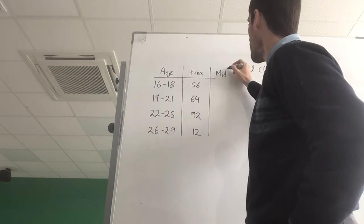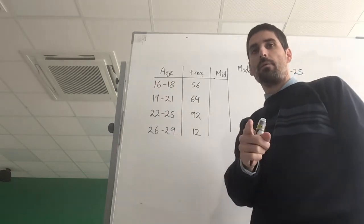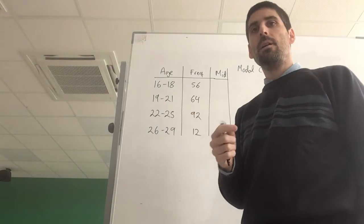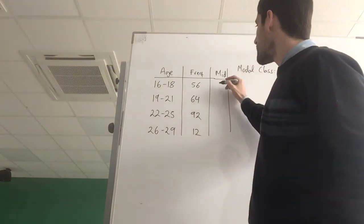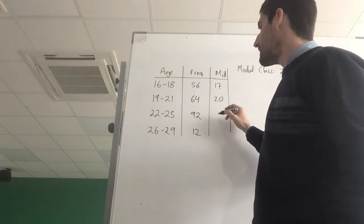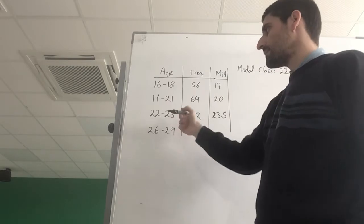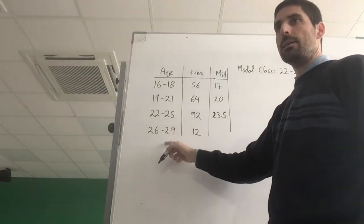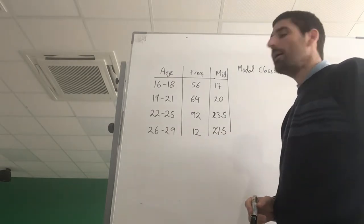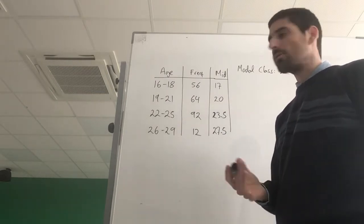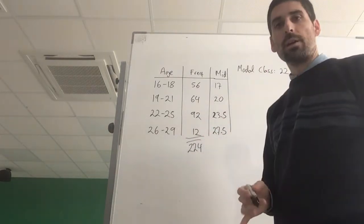So we need a new column here which we're going to call the midpoint, and we need to find the midpoint between these two numbers. To find the midpoint between two numbers you're going to add them together and divide by two. So the midpoint here is 17, that's 20, that is going to be 23.5, and that one there is going to be 27.5.